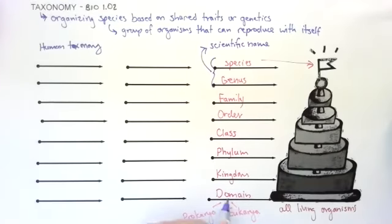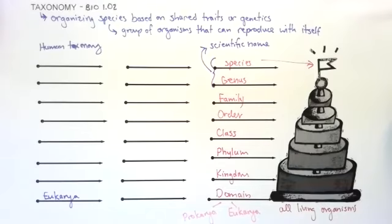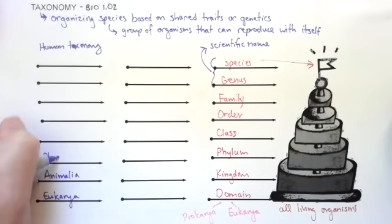We said that the domain that humans are is eukarya. We're eukaryotic cells. That means we're either plants, animals, fungus, or protists. Well, it turns out we are animals. So we are a part of animalia. In animalia, we have the nine phylum. And because we have a spinal cord, we're part of chordata. Everything with a spinal cord is part of chordata.